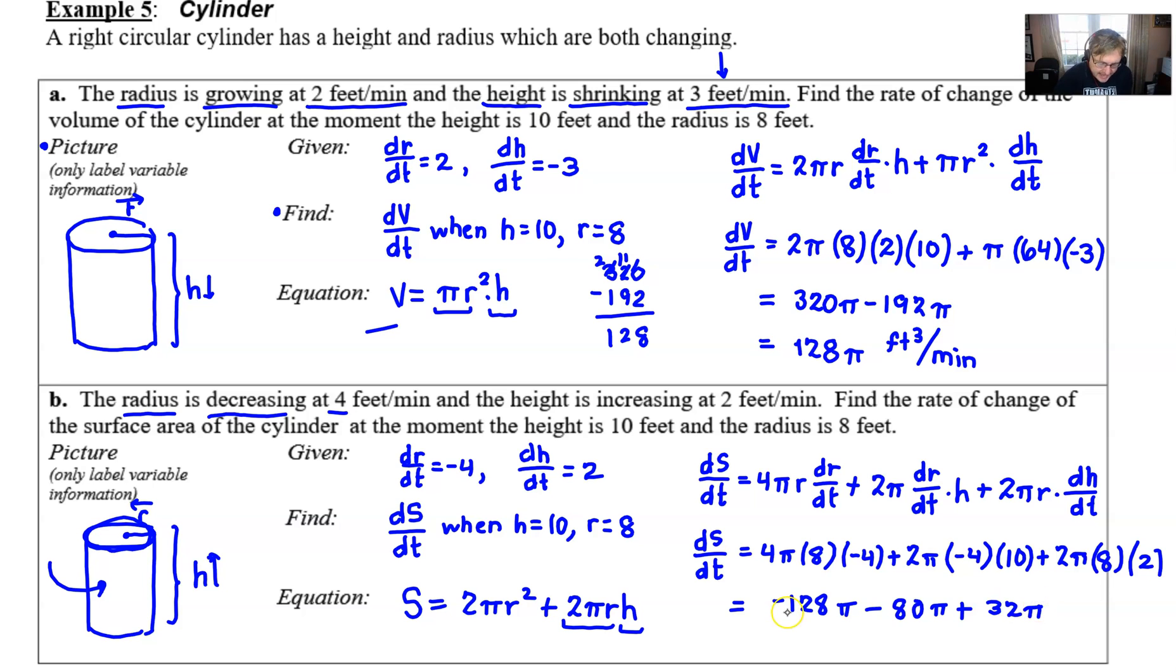So essentially we have -208 plus 32. So I didn't want to take any chances, so I checked this on a calculator and I got -176. And π would also go along with it. And it is important that we do put our units here.